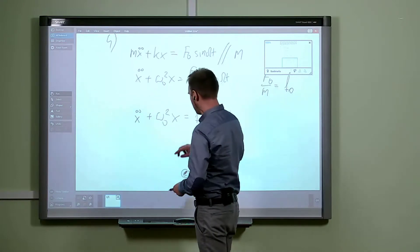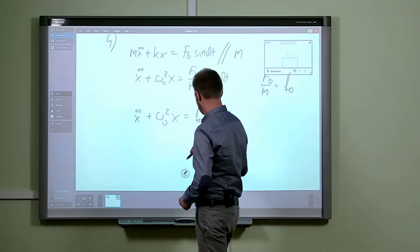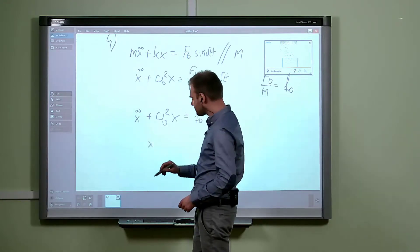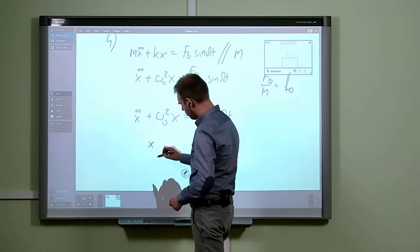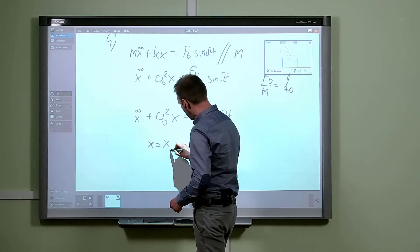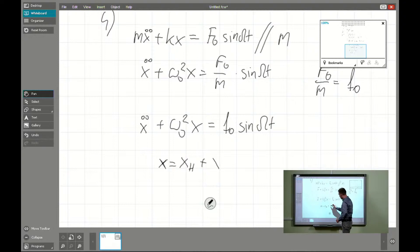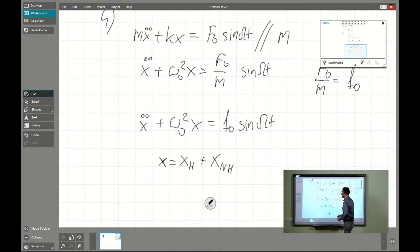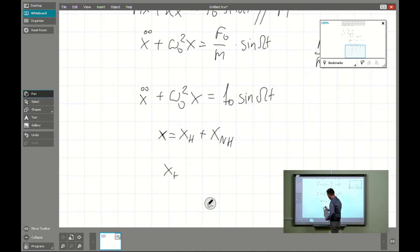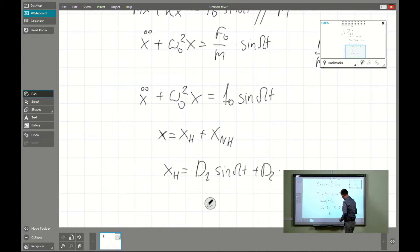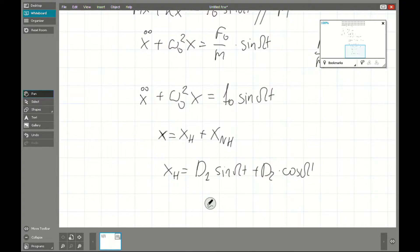Due to the theory of non-homogeneous differential equations, the whole solution is a sum of the general solution of the homogeneous part — which we obtained last time — plus one particular solution of the non-homogeneous part. For the homogeneous part it's quite easy: it will be D₁ sine omega zero t plus D₂ times cosine omega zero t.